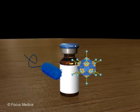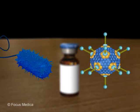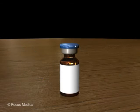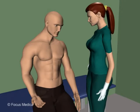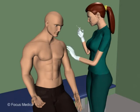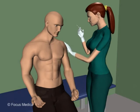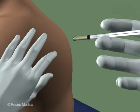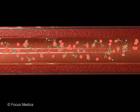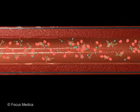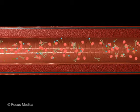Some inactivated vaccines contain the entire infectious agent, while others include only antigenic parts of the microbe. The advantages of inactivated vaccines are that they are safe, non-toxic, and show minimal interference of the vaccine with circulating antibodies.